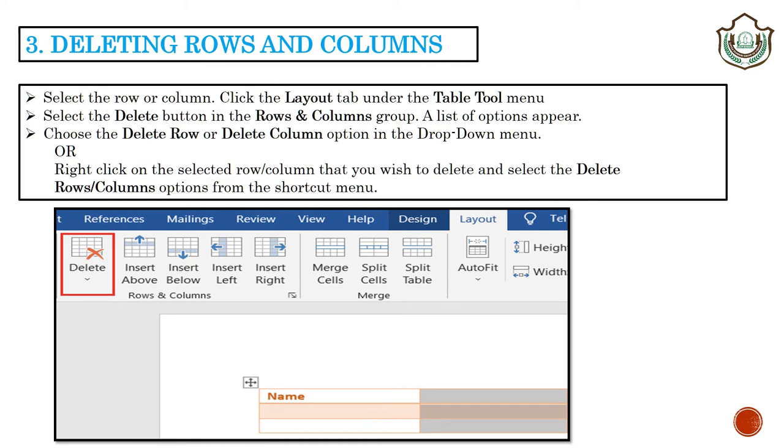Students, we can delete rows and columns in MS Word. For this, select the rows or columns which you want to delete from the table. Then click the layout tab under the table tools. Select the delete button in the rows and column group. Choose the delete rows or delete column option. Or right click on the selected rows or columns that you wish to delete and select the delete rows or column option from the shortcut menu.